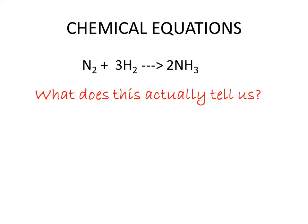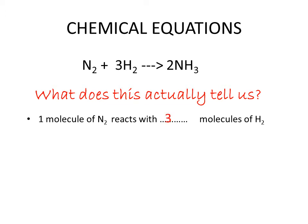You're all familiar with chemical equations. They tell us the quantity of reactants involved and the amount of products produced. For example, if we take one molecule of nitrogen and react it with three molecules of hydrogen, we'll get two molecules of ammonia. Since we know that a mole is just a very big number, we can also make the same comparison using moles.